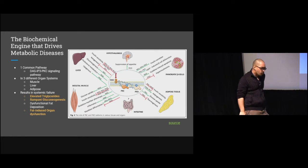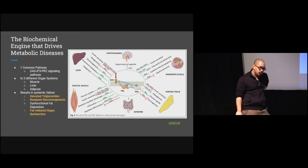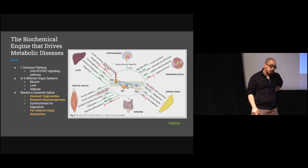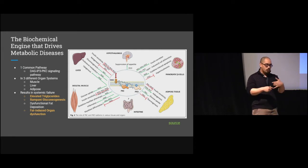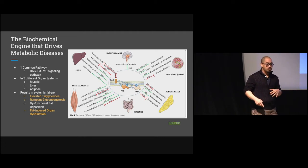Before anybody gets palpitations, we're going to talk about one common pathway — the DAG/IP3/PKC pathway. This pathway occurs in three different systems: the muscle, liver, and adipose. By driving this pathway into these three organ systems, you end up with the metabolic derangements we'll be concerned with for the next two-thirds of this lecture.